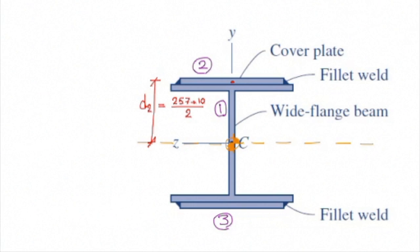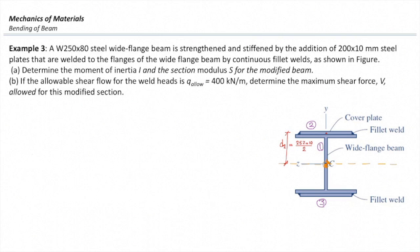As we can see, there are four welds on the sides. We know that the maximum allowable shear capacity of the weld is 400 kilonewtons per meter. We want to see how much is the maximum shear force that can be applied to this section.